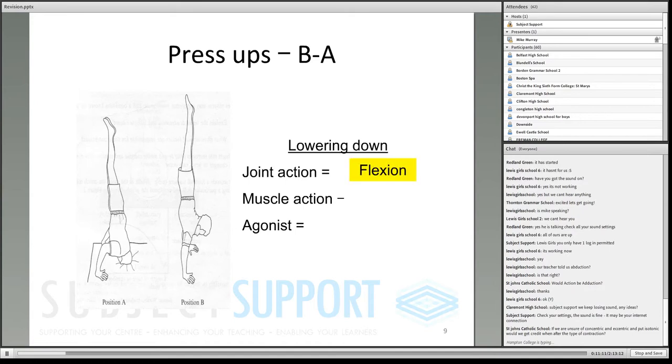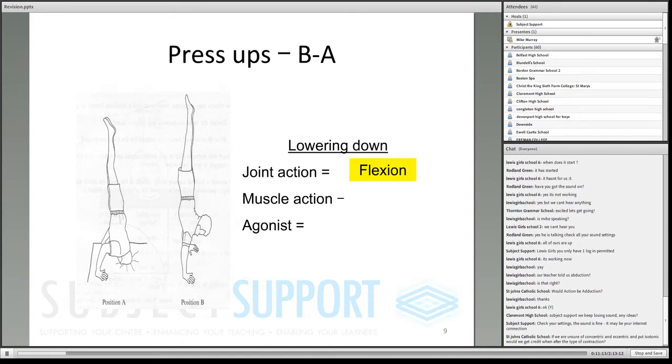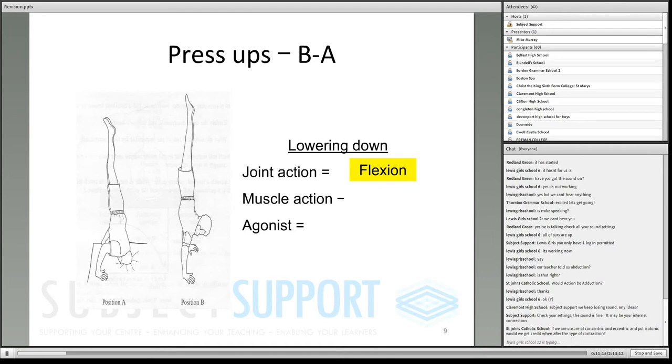Okay, joint action is flexion, going from straight arm to bent arm. Muscle action is eccentric. Any lowering down muscle action is eccentric.